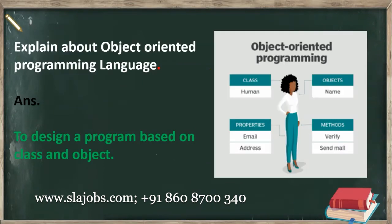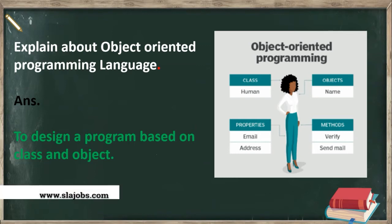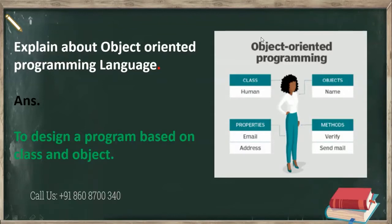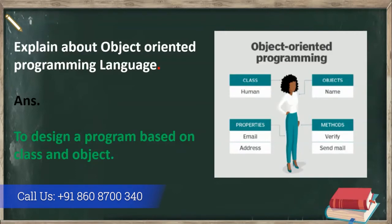The first question is: explain object oriented programming. What is meant by object oriented programming? It is used to design a program based on a class and object. Any object oriented programming depends upon the class and object. For example, take 'human' — human is a class. We can call the human by using the human name, so human name is an object. All remaining properties — where he belongs to, where he is staying — everything comes under that human.